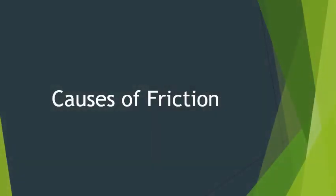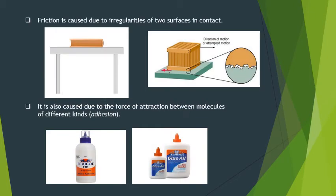Now, let us discuss the various causes of friction. Friction is caused due to irregularities of two surfaces in contact. This irregularity or roughness of the surface depends on the nature of its material. The more the irregularity, the more interlocking there is, and hence the greater is the friction. Friction is also caused due to the force of attraction between molecules of different kinds. This is called adhesion or adhesive force.